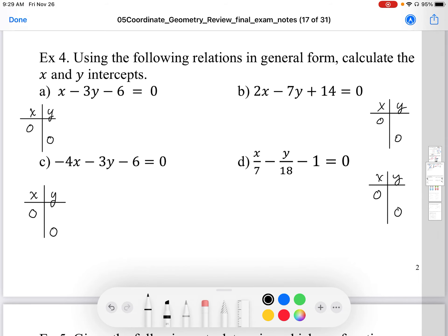So these are general form equations. The ones in C and D are not quite general form because of the fraction in D and the negative on C. However, it's still in a similar form of equation. And we want to calculate the x and y intercepts. Basically, to calculate x and y intercepts, we're just going to plug in 0 for x to get a y intercept and plug in 0 for y to get an x intercept.